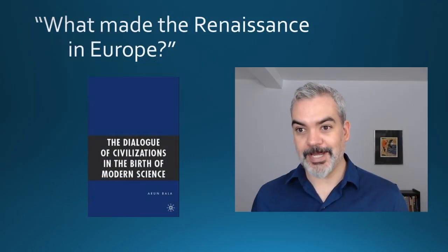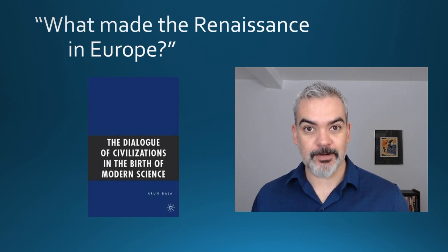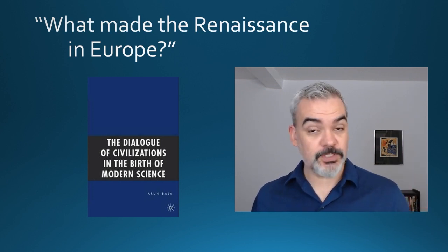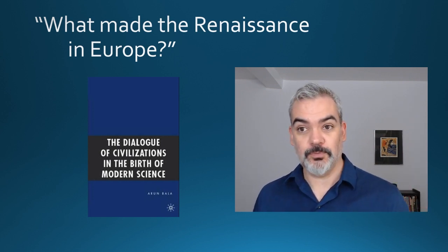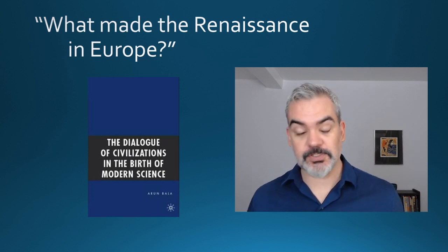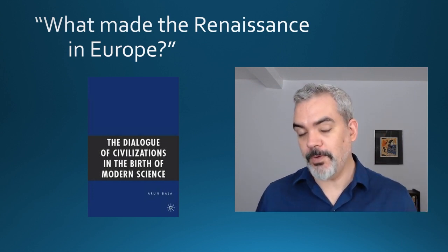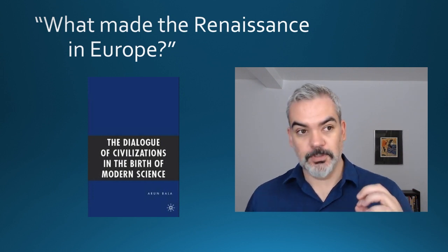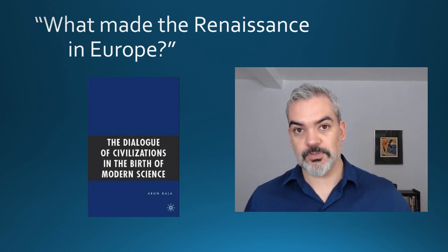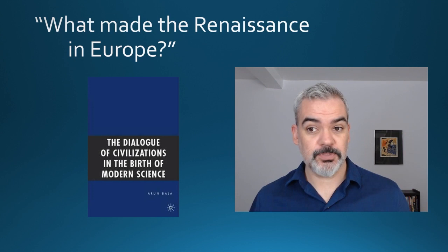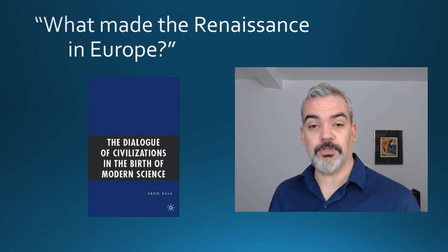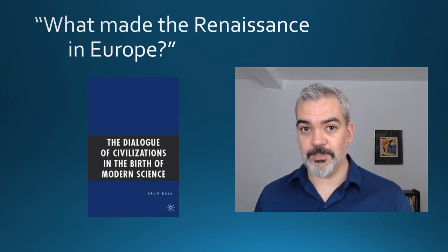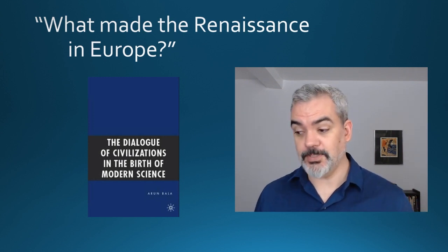This week's topic is science and empire. The best way into this question is by looking at the readings for this week, which is Bala's chapter six, where he asks what made the Renaissance in Europe. In the last few chapters, Bala has been setting up his argument, and at this point he's actually delivering what he thinks is the evidence for his dialogical picture of science.